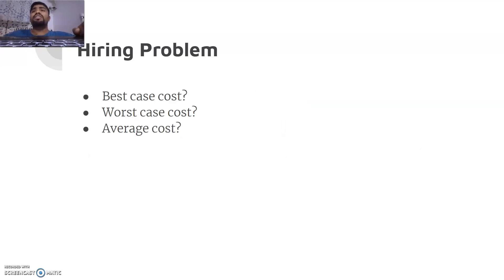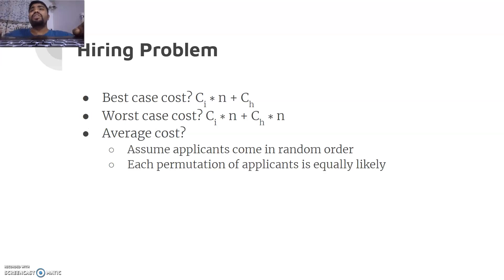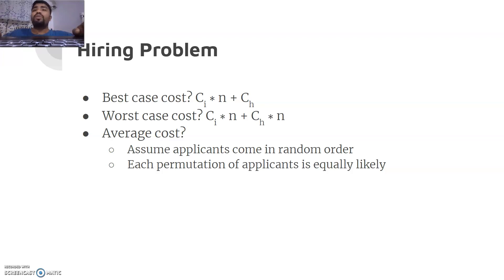What are the best case, worst case, and average case costs? Best case: the first person who comes is the best candidate, so I incur the hiring cost just once and only interview the rest - hiring no one else. Worst case: every new day the candidate is better than the currently hired one, so I interview and hire every single person - cost is c_i × n plus c_h × n. Average case depends on the order the applicants come, so we assume they come in a random order.